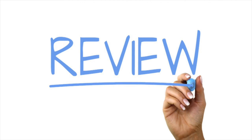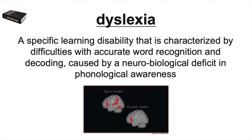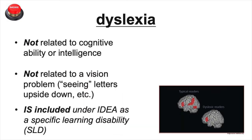We've covered a lot of material in this video, so let's review. By definition, dysgraphia includes difficulties with physical aspects of writing called transcription — this includes handwriting, typing, and spelling. Difficulties with transcription skills can also cause problems or delays in written expression. Dyslexia is a specific learning disability characterized by difficulties with accurate word recognition and decoding, caused by a neurobiological deficit in phonological awareness. Neither dyslexia nor dysgraphia are related to a student's cognitive ability, intelligence, or their vision, but dyslexia is included as a specific learning disability under IDEA where dysgraphia is not.